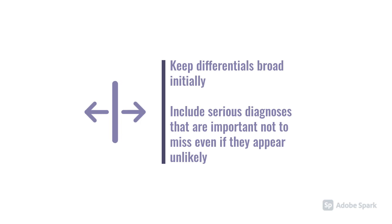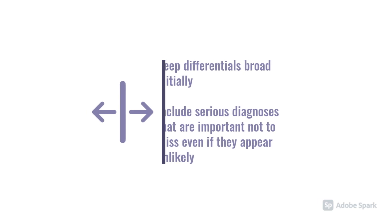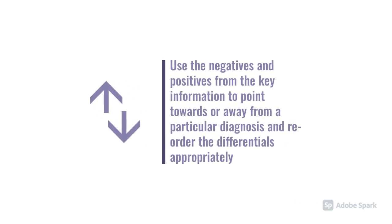For example, when seeing somebody with back pain, it's important to always think: is this an abdominal aortic aneurysm? I might not think it's particularly likely, but if I miss that diagnosis it could be highly significant for the patient. So it's important to have those serious but less likely differentials in your head. Once you've got that list, you need to use the negatives and the positives from that key information to direct you towards particular diagnoses and reorder your differentials appropriately.